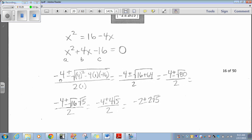Now, my a is 1, my b is 4, and my c is negative 16. So, if I plug this into quadratic formula, negative b, negative 4, plus or minus the square root of 4 squared minus 4 times a, 1, times c, negative 16, all over 2a, 2 times 1. That gives me negative 4 plus or minus the square root of 16 plus 64. I get 64 because negative 4 times 1 is negative 4. Negative 4 times negative 16 is a positive 64.